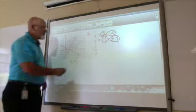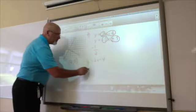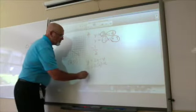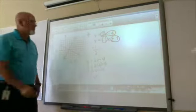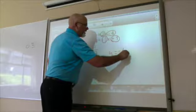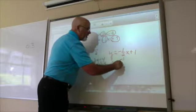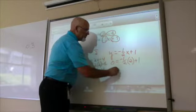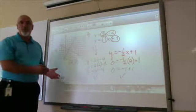We check the solution (2, 0) in both equations. For y equals 2x minus 4: 0 equals 2 times 2 minus 4, which is 0 equals 4 minus 4 — a true statement. For y equals negative one-half x plus 1: 0 equals negative one-half times 2 plus 1, giving 0 equals negative 1 plus 1, which is also true. The ordered pair (2, 0) correctly solves the system.